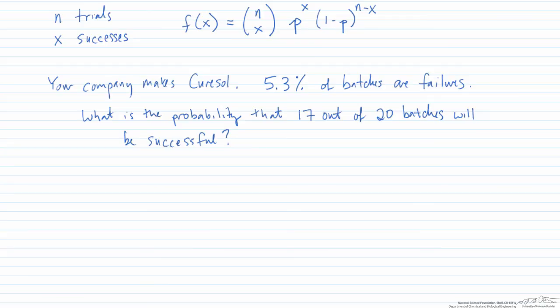We are going to use the binomial distribution and we use this binomial distribution function because we have a probability of success and a probability of failure. We are looking at successes here. Our probability 5.3% is actually not a success. This is a probability of failure. So the probability of success then would be 94.7%. We have a total number of 20 trials. We want x to be 17.